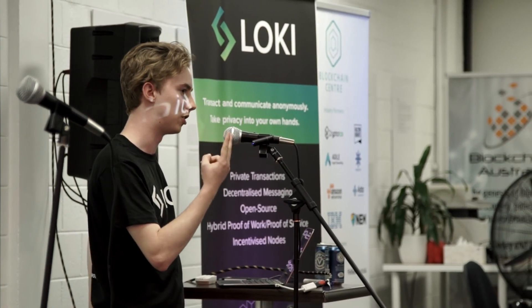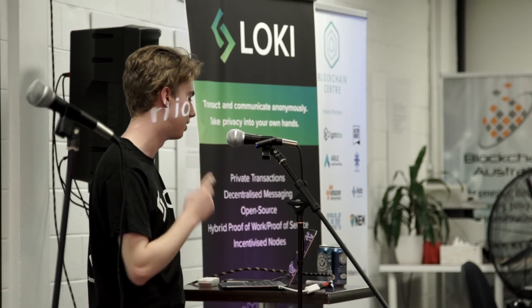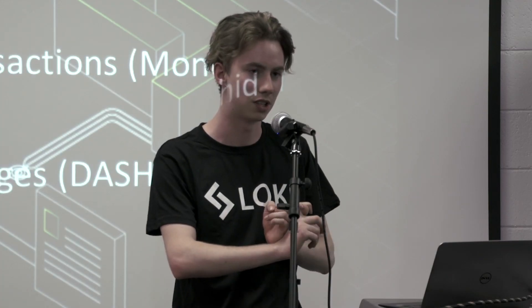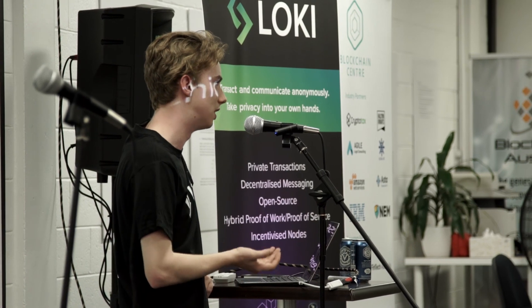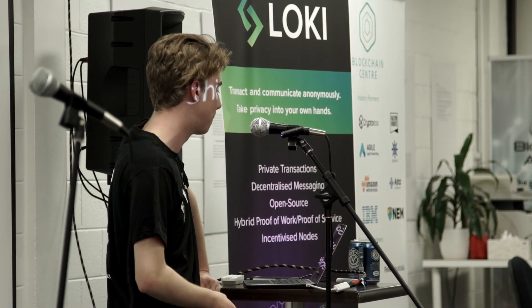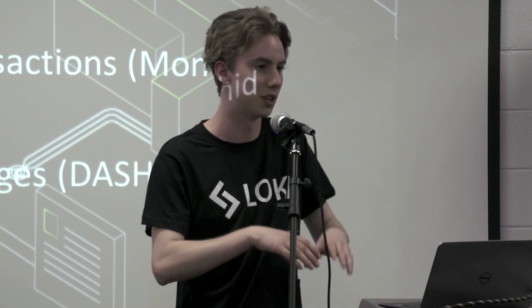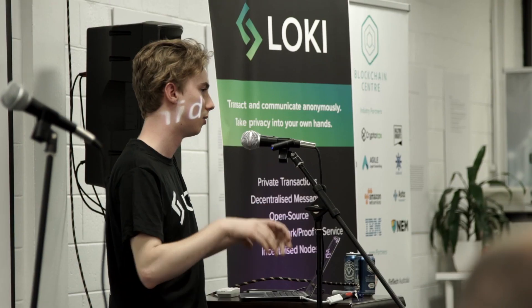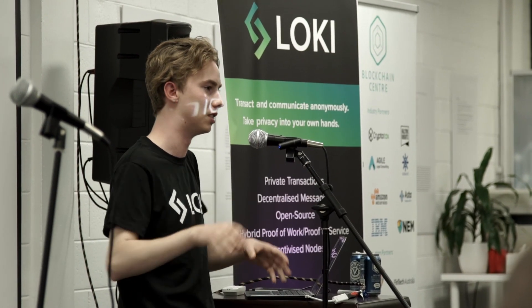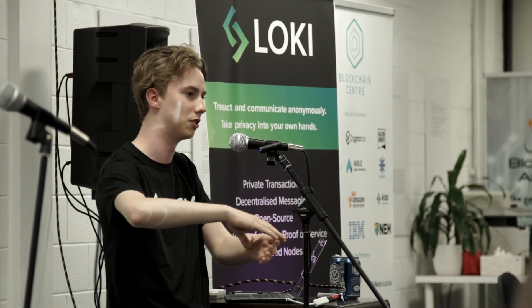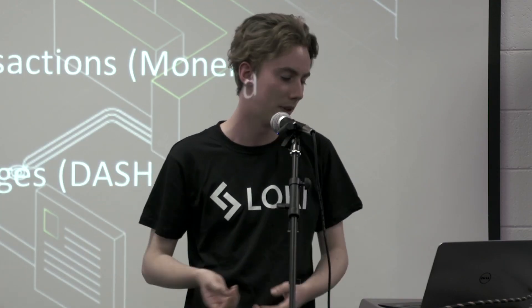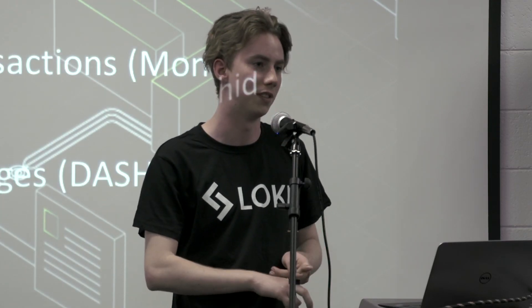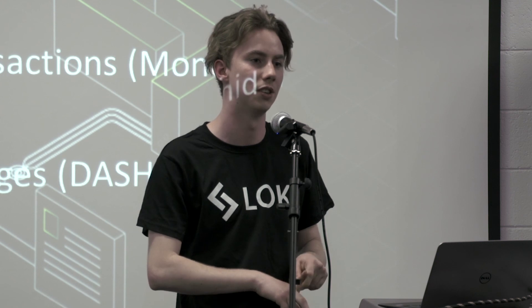So how is Loki built? It's fundamentally two different technologies mashed together. The private medium for transactions is based on Monero — we're taking the source code because we believe it's the best way to do things at the moment. The second layer is the nodes on top of that, which allow us to route private messages and basically build a protocol layer where we can connect different people. That's built more off the Dash master node system.